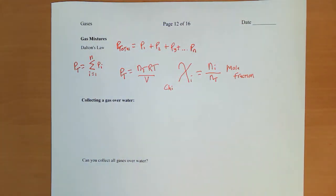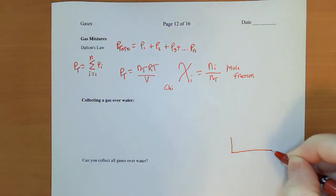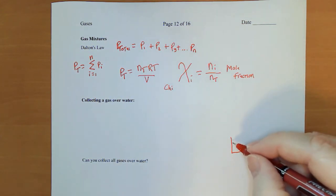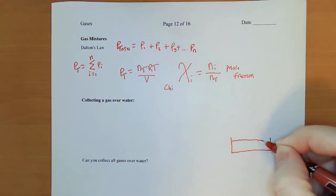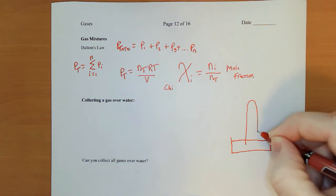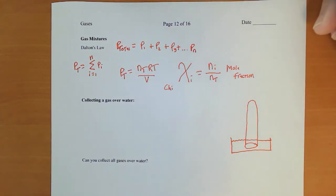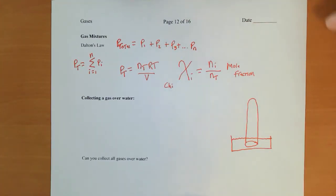Now we're going to be looking at an experiment that involves collecting gas over water. Imagine that we have a pneumatic trough of some type, a big tub full of water, and we have inverted into it a gas collection tube. Fancy name: eudiometer.